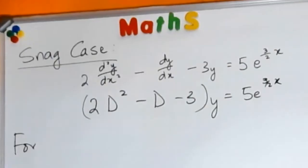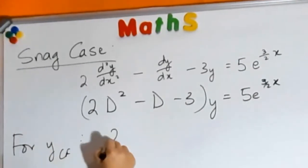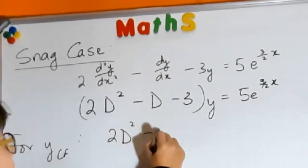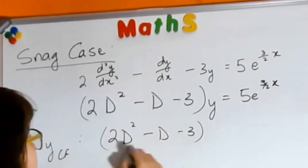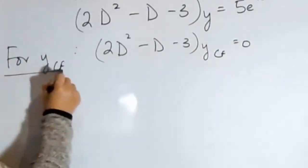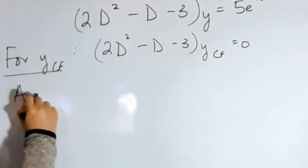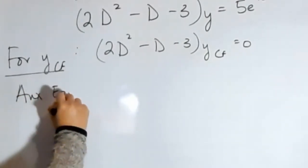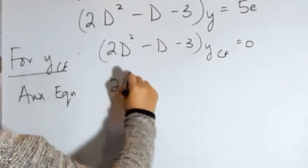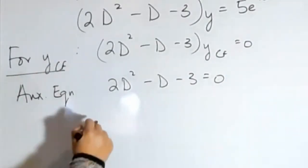And we start with finding our complementary function. To find the complementary function, we look at our auxiliary equation and find the roots of it.